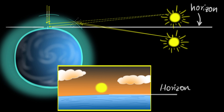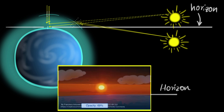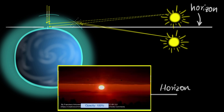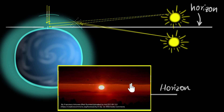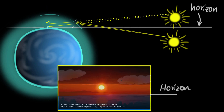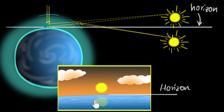All right, so the last thing is: why does the sun appear squashed during the sunrise or the sunset when it's close to the horizon? The concept is exactly the same. Can you pause and try to think about this for a while? Now we know that the sun is actually below the horizon, and due to the atmosphere, it appears higher in the sky.